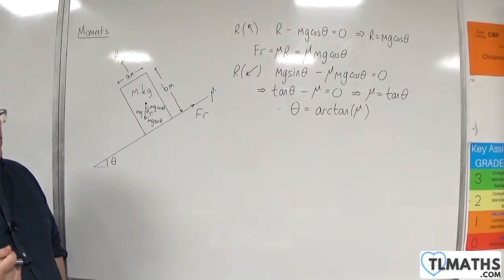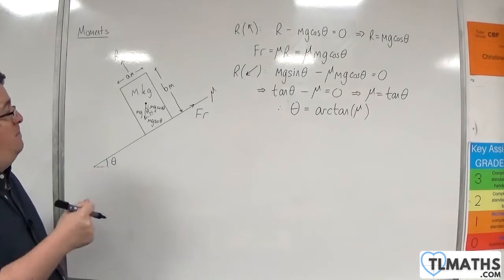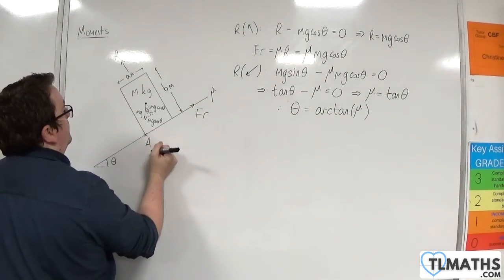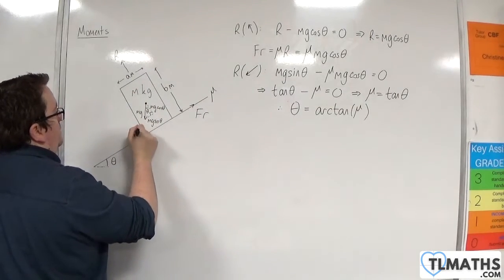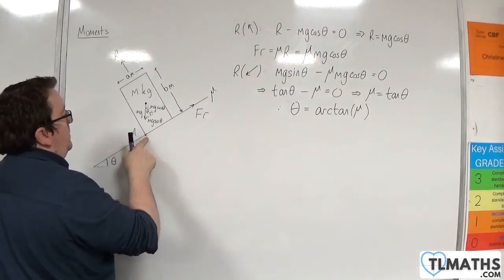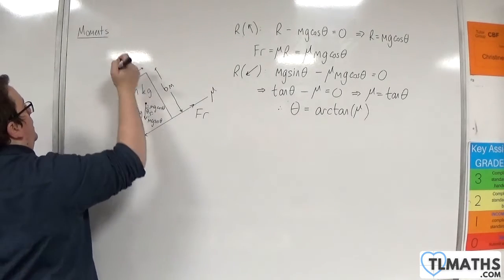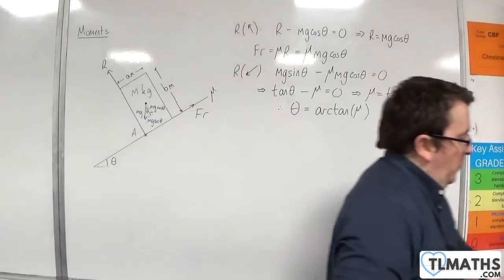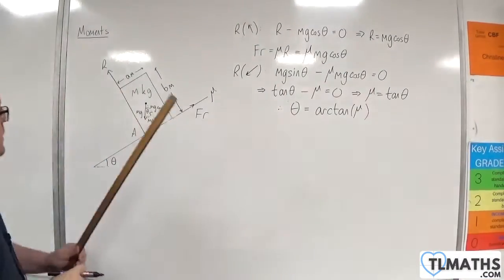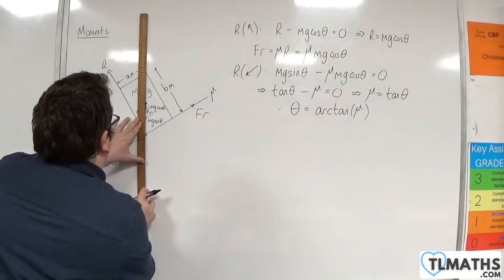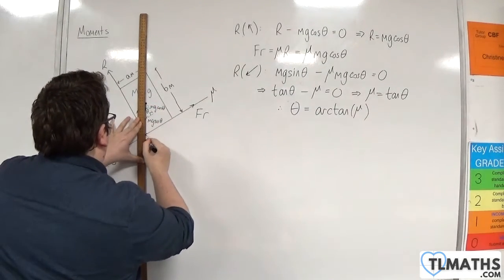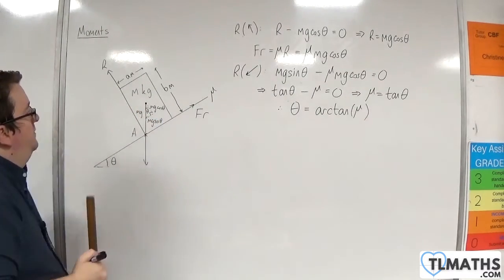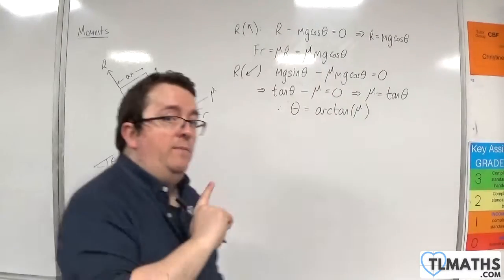Now let's take a look at taking moments about this point here where it's going to topple. So we'll call this point A. The key thing is that's going to be the point of contact, so the normal reaction force is just going to be on that corner. And what's also important is that we can consider that weight and it's going to be going through that point of contact. So keep that in mind.